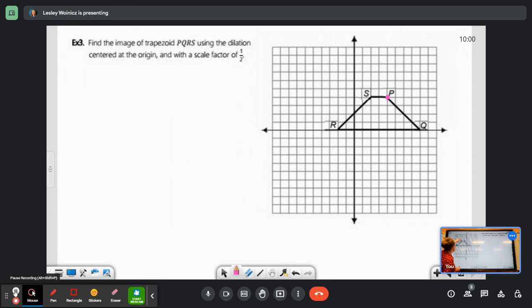So P is one, two, three, four units right and four units up. So I want to take that and I want to go half that distance. So if I'm looking at this, halfway to P would be at 2, 2 and that's going to be my P prime. So here's 2, 2. That is P prime.